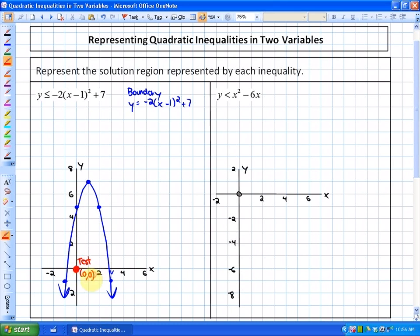I'm going to test (0, 0), and test to see if it is a solution of the inequality. So if I test (0, 0), what I'm going to get is, is 0 ≤ -2(0 - 1)² + 7? If it is, I'm going to shade inside the parabola. If it's not, I'm going to shade outside. So this is -2(1) + 7, is 0 ≤ 5? The answer to this is true, so I'm going to shade inside the parabola where the point (0, 0) exists. So the solution to this inequality is this region right here.